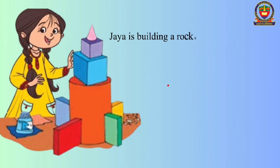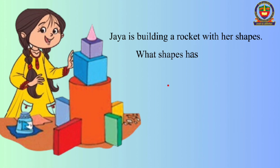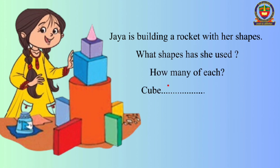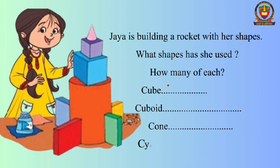Jaya is building a rocket with her shapes. What shapes has she used and how many of each? Cube, cuboid, cone, cylinder. Look at the picture and find the answer.